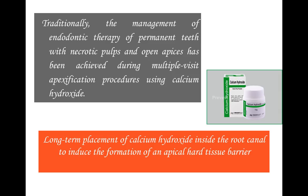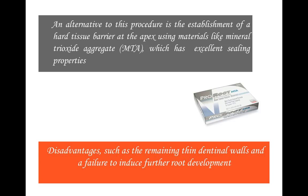The gold standard material for apexification, apexogenesis, or direct pulp capping has long been calcium hydroxide. If a question asks about the gold standard material, you can go with calcium hydroxide. But now the trend moves towards MTA, which is the alternative material of choice. MTA has excellent sealing properties and can increase the dentin hard tissue barrier at the apex. The main disadvantage is related to remaining dentinal thickness and failure to induce development in exception cases.